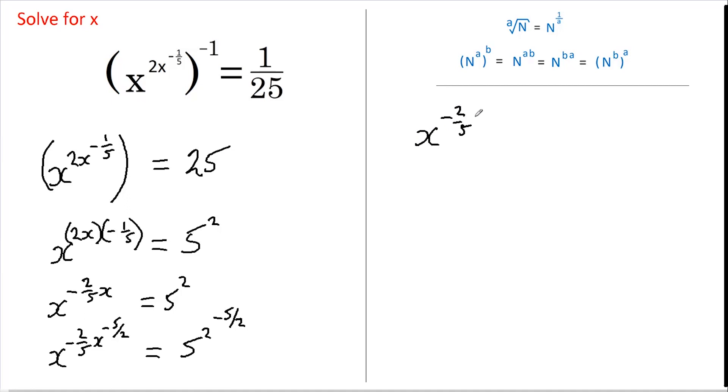...2/5 of x multiplied by negative 5 over 2, and this equals 5 to the power of 2 multiplied by negative 5 over 2.